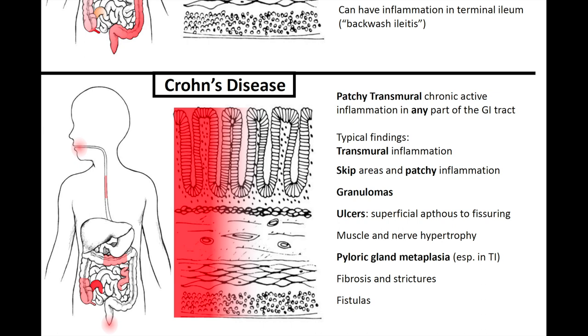Additional findings in Crohn's include ulcers ranging from superficial aphthae to fissuring ulcers, muscle and nerve hypertrophy, pyloric gland metaplasia, fibrosis and strictures, and fistulas.